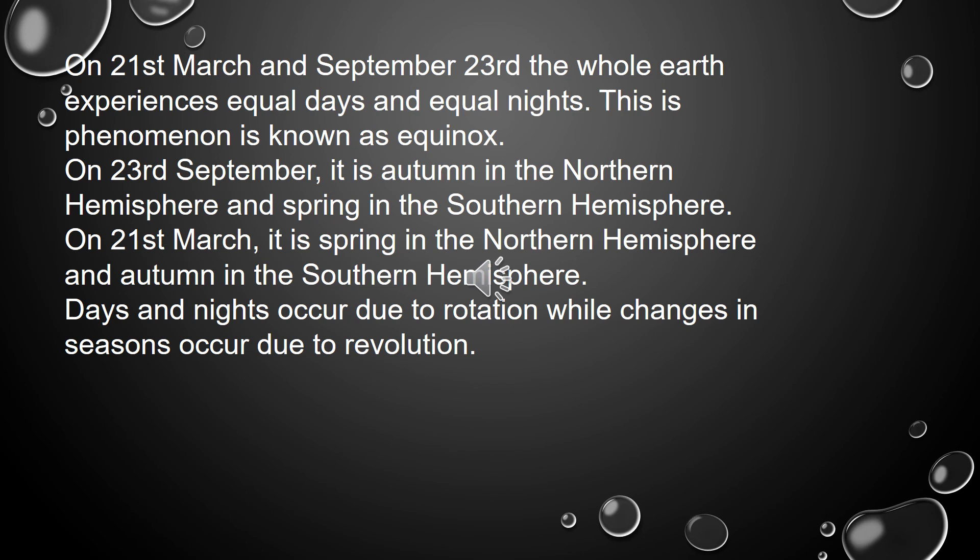On 21st March and September 23rd, the whole earth experiences equal days and equal nights. This phenomenon is known as equinox. On 23rd September, it is autumn in the northern hemisphere and spring in the southern hemisphere.